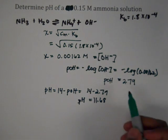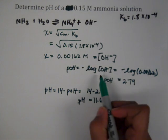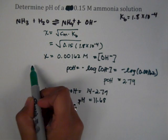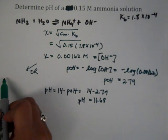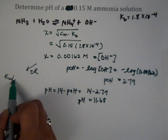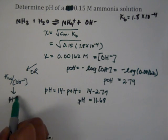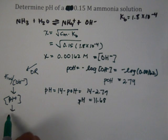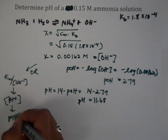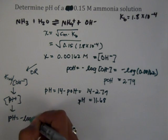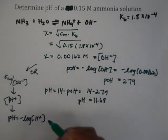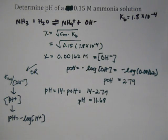The other option would be to take the OH- concentration, divide Kw by it to get H+ concentration, then take negative log of that to get pH directly. Whichever method you prefer is fine, but remember we also need to check our assumption.